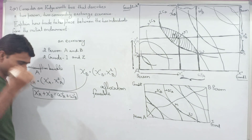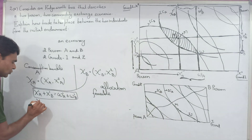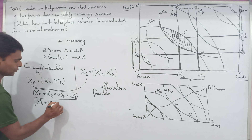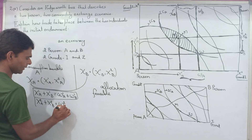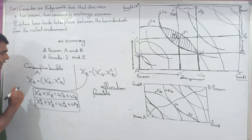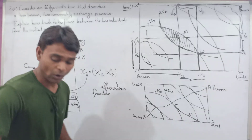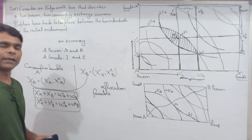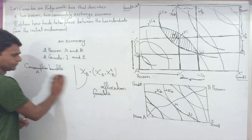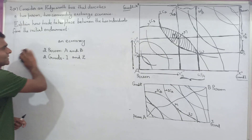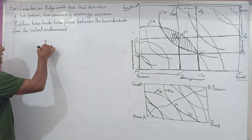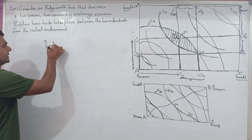In a similar way, we can show X2A plus X2B equals total endowment of good two. Here, total amount of each good consumed equals total amount available — total demand equals total supply. Any particular allocation is called the initial endowment.